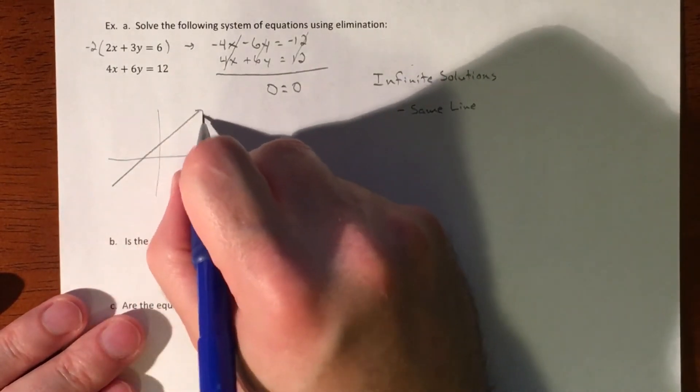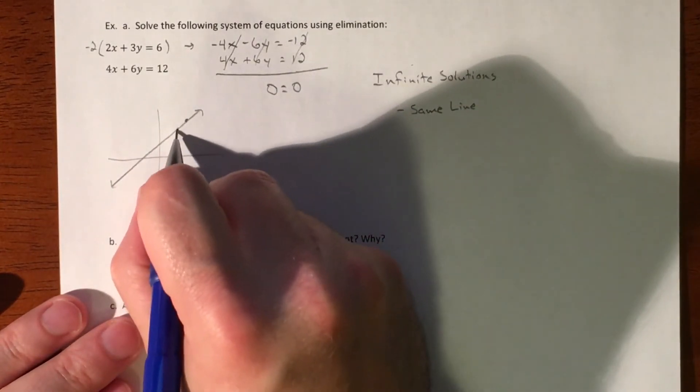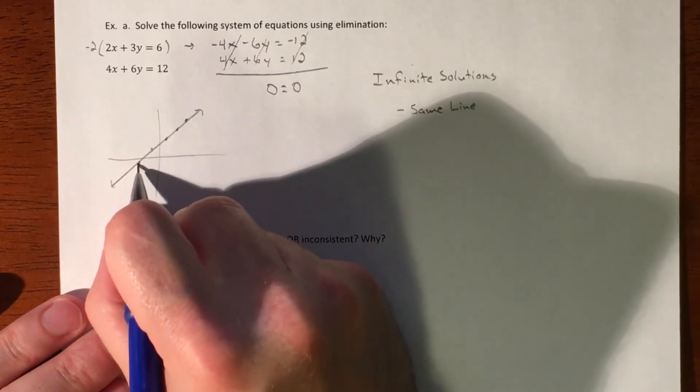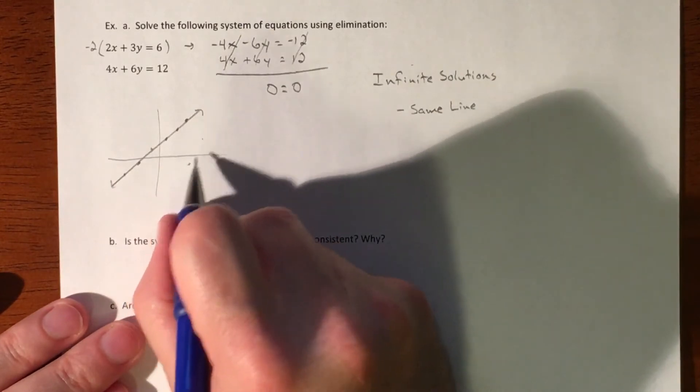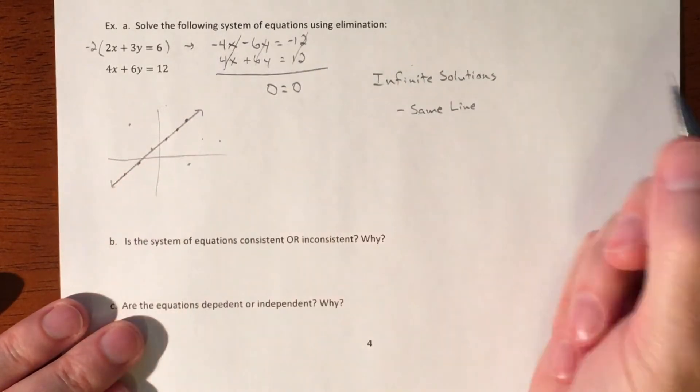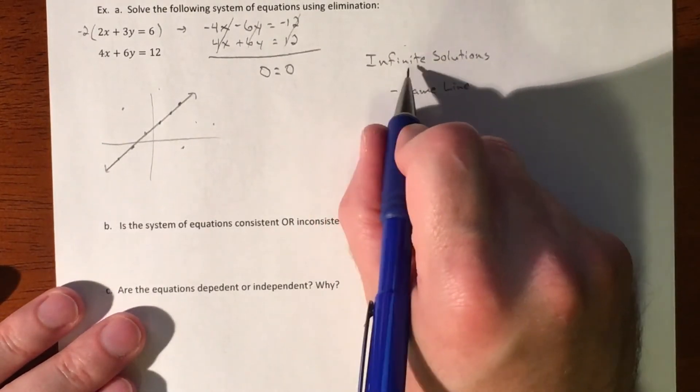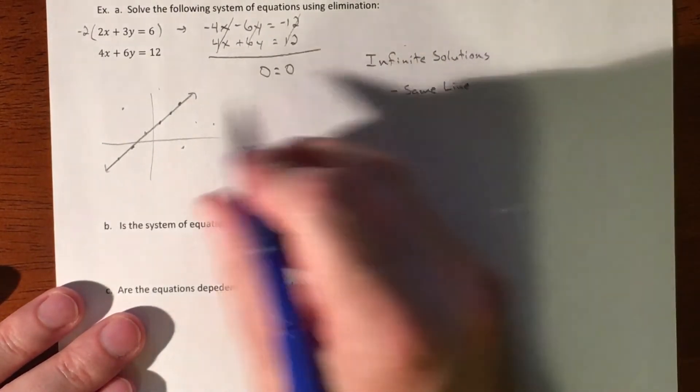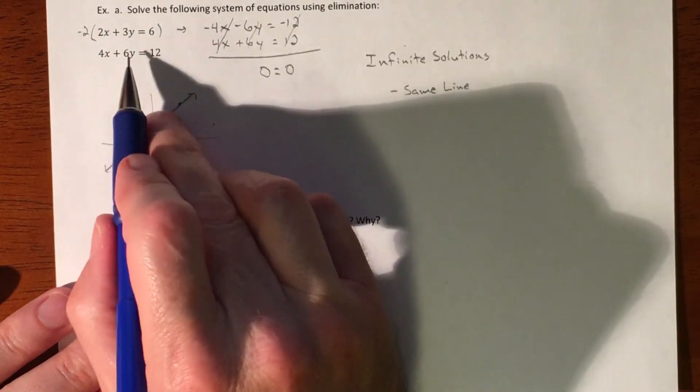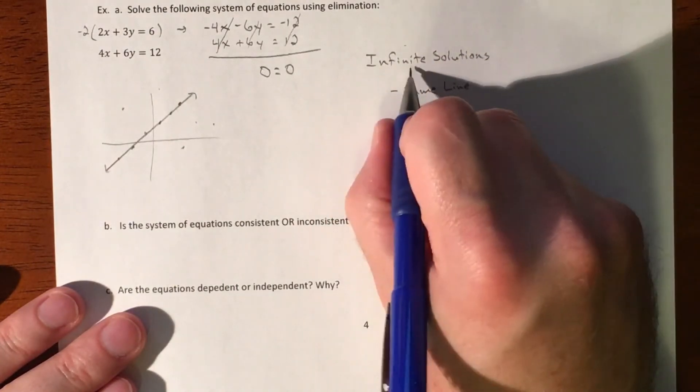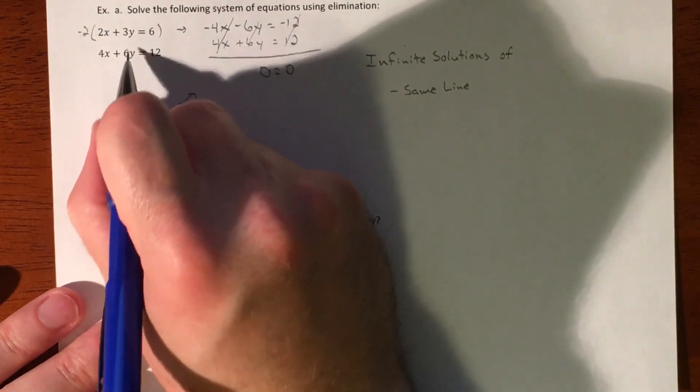You graph one, you graph the second, it's perfectly on top of the other one. So you have all these solutions, every single point that works for one works for the other. However, if you say infinite solutions, you're talking about points everywhere. But those points aren't part of the solution, so you've got to say something more specific about your infinite solutions.